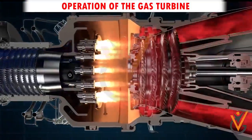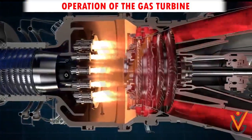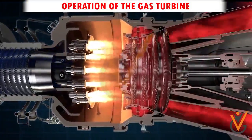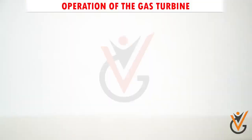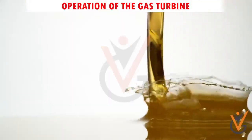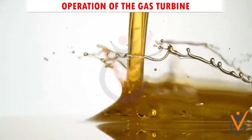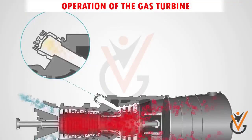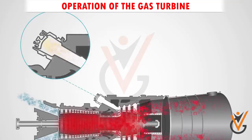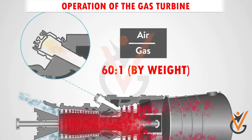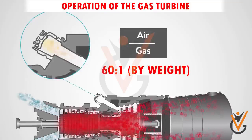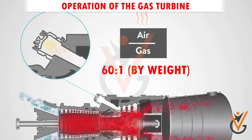In the combustion area, the hot compressed air ignites the injected fuel. The fuel is typically a clean, low-viscosity oil. The air-fuel ratio is most likely 60:1 by weight, igniting to produce high-pressure gas.